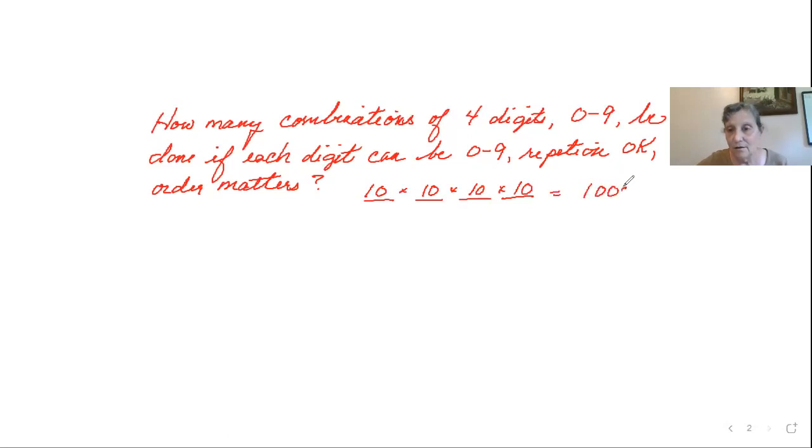Which is actually 10,000. Counting the zero, there are 10,000 numbers between zero and 9,999. So the four-digit numbers, this could actually be zero, zero, zero, zero through 9,999, that's 10,000 numbers.